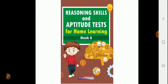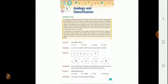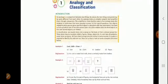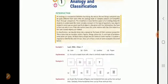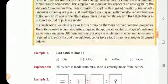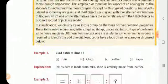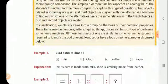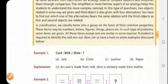Let us start with analogy and classification. When we make comparison between two things, we call it analogy. Like in example one, curd is prepared from milk, so shoe is manufactured from leather. Curd comes from milk, shoe comes from leather, so the right answer is leather.